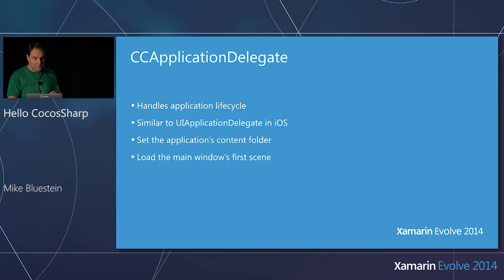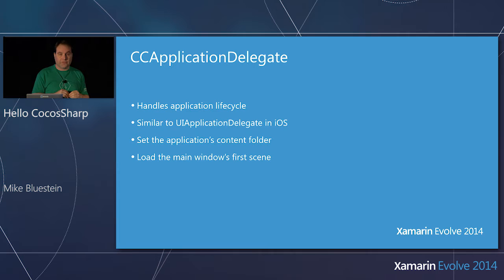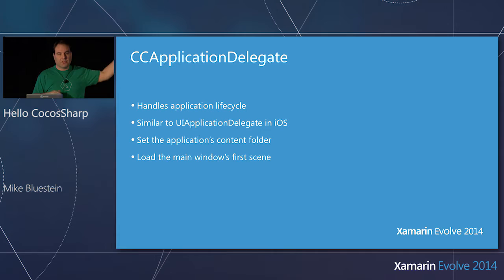One of the things you saw there is the CC Application creates a CC Application Delegate. If there are iOS developers in the room, this will look very familiar — it's very much like what an app delegate is in iOS proper, except it's just for CocosSharp and it's cross-platform. You're handling application lifecycle type of things, such as when your application moves into the background.